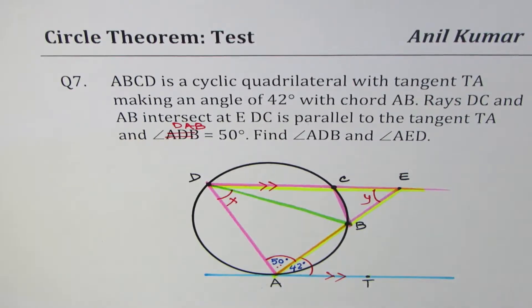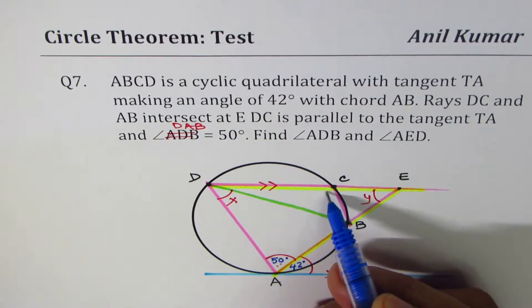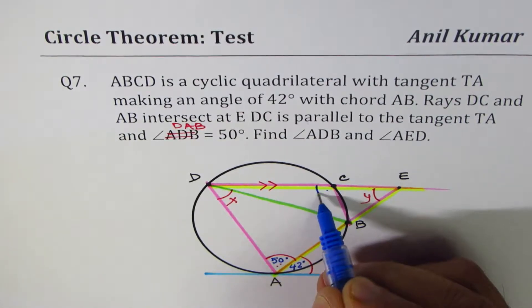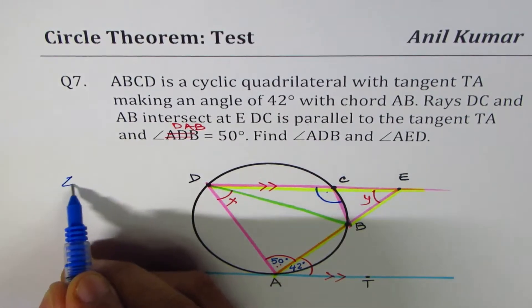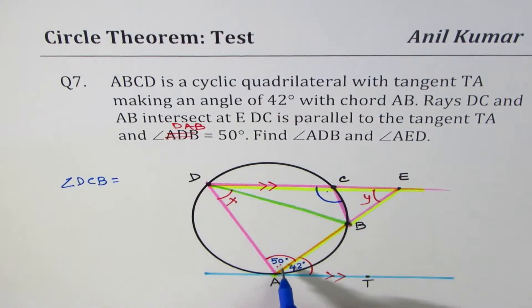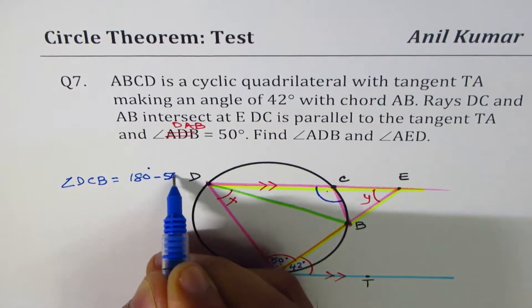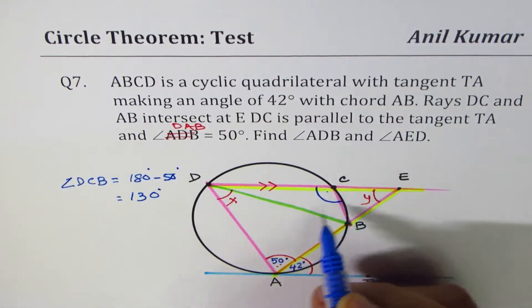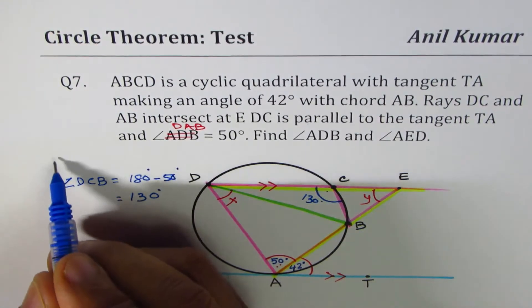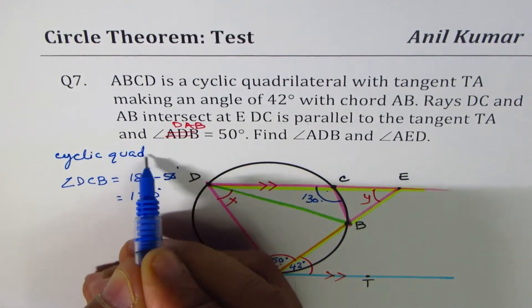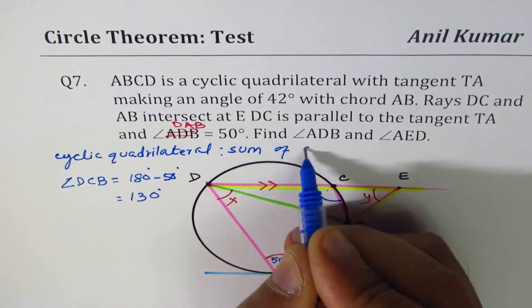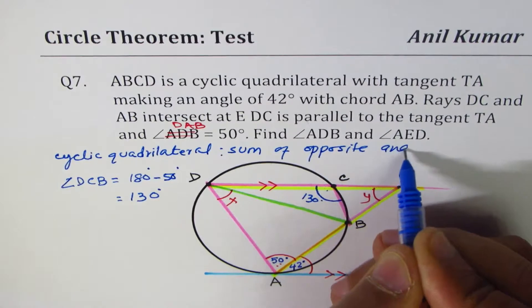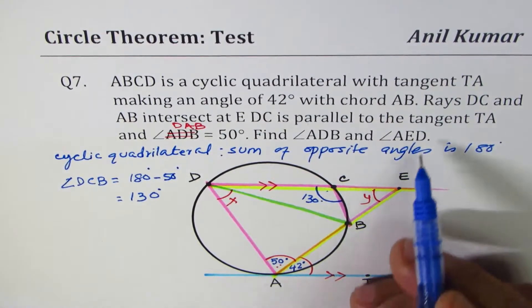Now to begin with, let's start with the cyclic quadrilateral. Sum of opposite angles should be equal to 180 degrees. So we are given 50 degrees here. We can find what this angle is. So the angle DCB should be equal to 180 degrees take away 50 degrees. That is 130 degrees. This we got from cyclic quadrilateral, sum of opposite angles is 180 degrees.